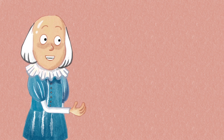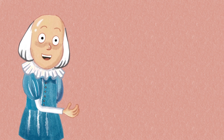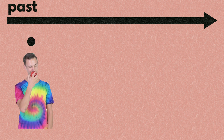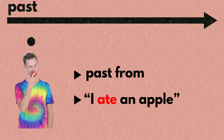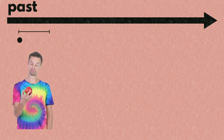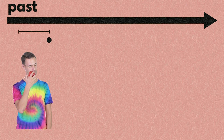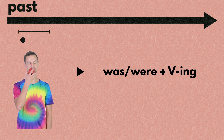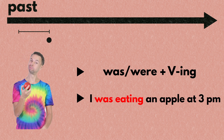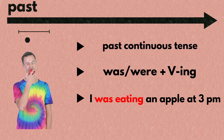Don't worry if this sounds too difficult because now I'm going to explain each of these tenses in more detail. Out of the three time zones, let's start with the past time zone. If something happened at a past point in time and there's nothing special about it, use the past form of verbs, as in I ate an apple. This tense is called the simple past tense. If you're talking about something that was ongoing and unfinished at a past point in time, put was or were with the ing form of a verb, for example I was eating an apple at 3 p.m. This tense is called the past continuous tense.